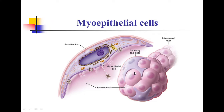Another important structure of the salivary gland is myoepithelial cells. These are star-shaped cells situated around the acini, present between the acinar cells and the basal lamina. They contain actin filaments, making them contractile. Due to contraction of these myoepithelial cells, the secretions of the acinus are squeezed out.